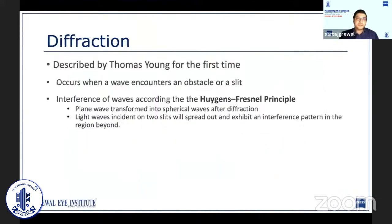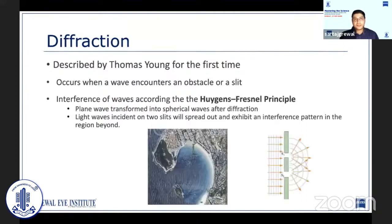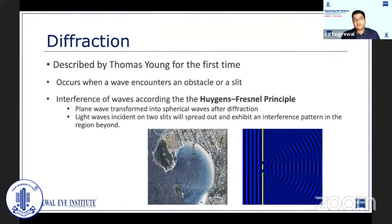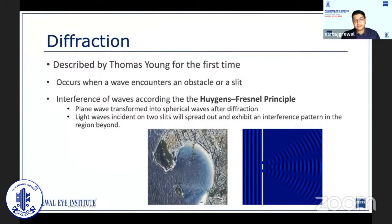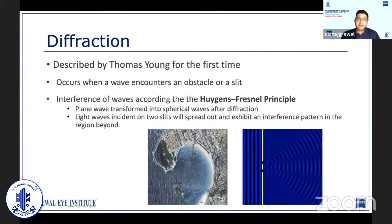Diffraction refers to various phenomena which occur when a wave encounters an obstacle or a slit. Due to diffraction, when we try to pass light through a very small hole, we will notice that it does not go in a straight line, but rather spreads out. The Huygens-Fresnel principle states that every point of a wave front can be thought of as being its own source of secondary wavelets, subsequently spreading in a spherical distribution. Basically, this means that the planar wave is transformed into spherical waves after diffraction.